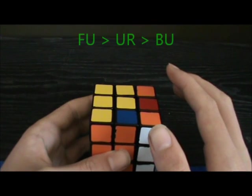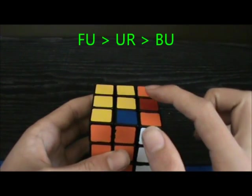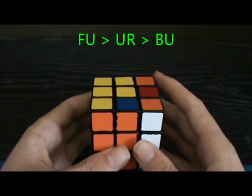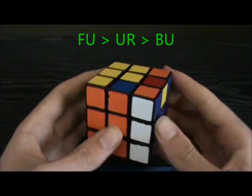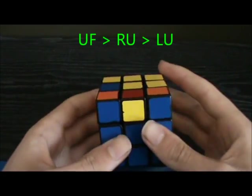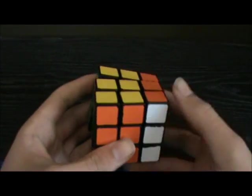Now the cycle is FU to UR to BU. With a rotation it's easy to see that turbo can solve this case. UF to RU to LU. And undo.